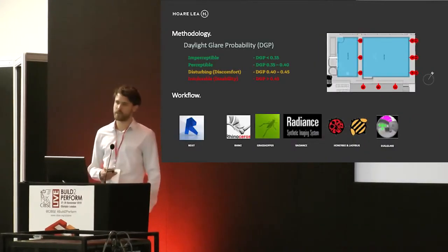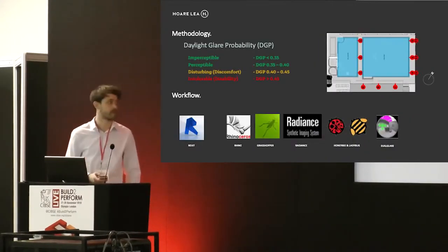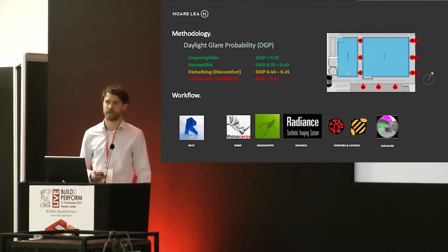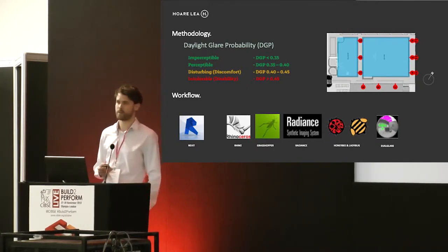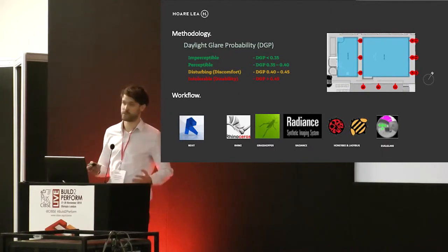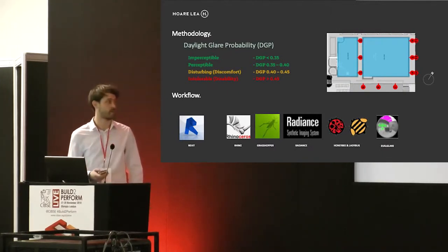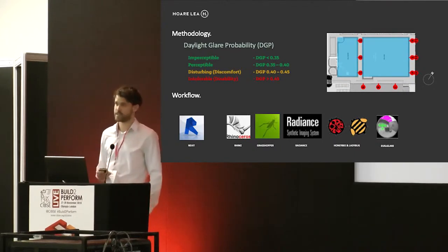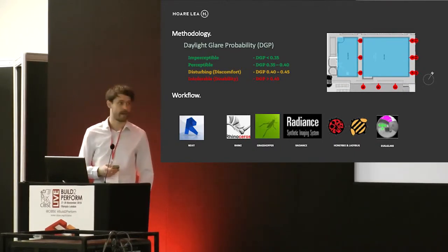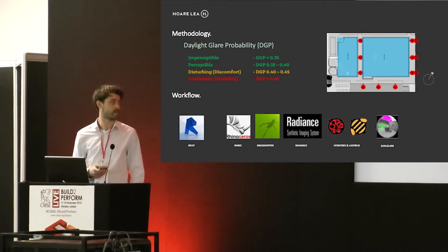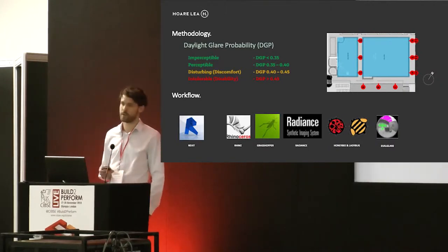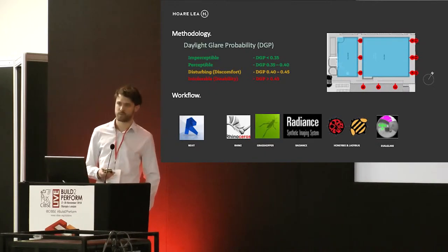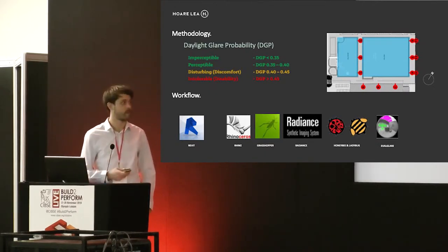The methodology we decided to use was the metric Daylight Glare Probability (DGP). This essentially gives you a value on the probability of glare occurring for a specific view. It's split into four thresholds — the first two are generally considered to be acceptable, and in this environment disturbing and intolerable glare, so a DGP of 0.4 upwards is likely to cause problems within a space such as a swimming pool.